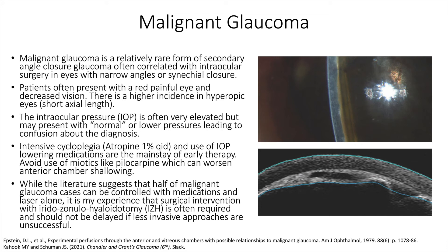While the literature suggests that half of malignant glaucoma cases can be controlled with medications and laser alone, it is my experience that surgical intervention with iridozonulohyaloidectomy, or IZH, is often required and should not be delayed if less invasive approaches are not successful. Posterior vitrectomy with meticulous anterior hyaloidozonulectomy is an approach that can be employed if all the above techniques fail, although IZH has been quite successful in our hands.